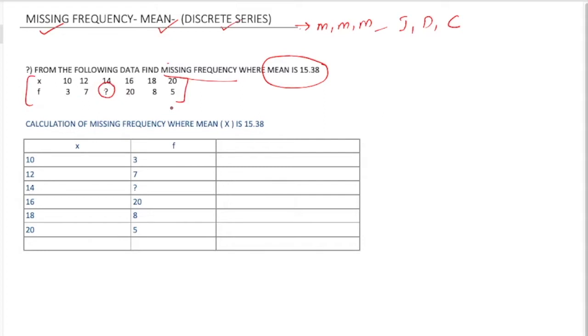We get to know whether it is a discrete series or continuous series. It is not mentioned in the question. With the help of these values we'll find out whether it is discrete or continuous series.